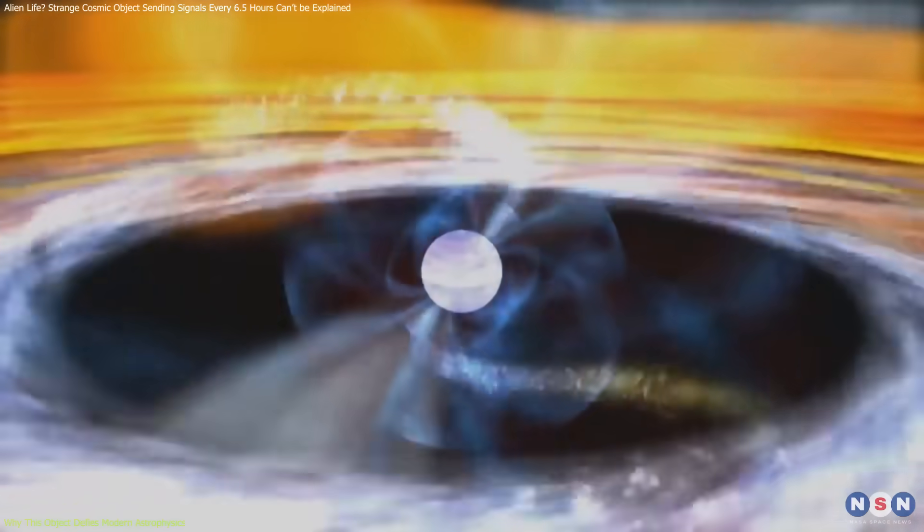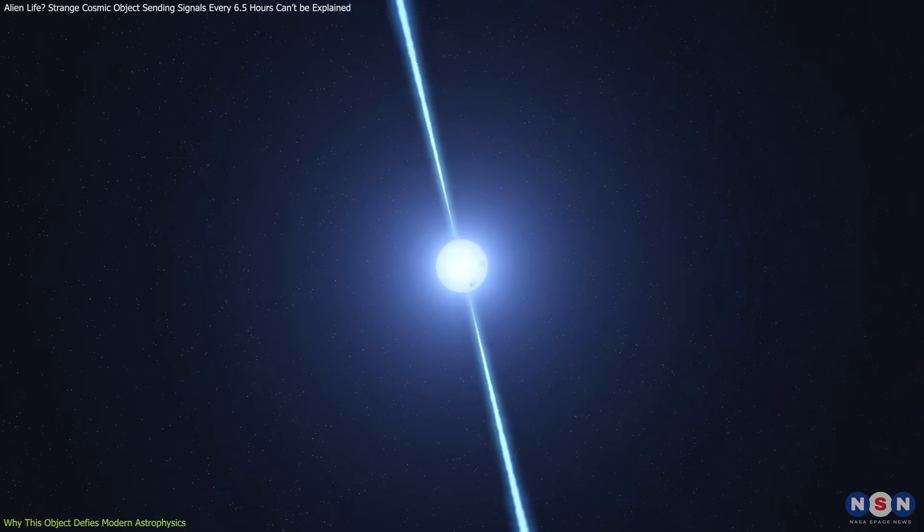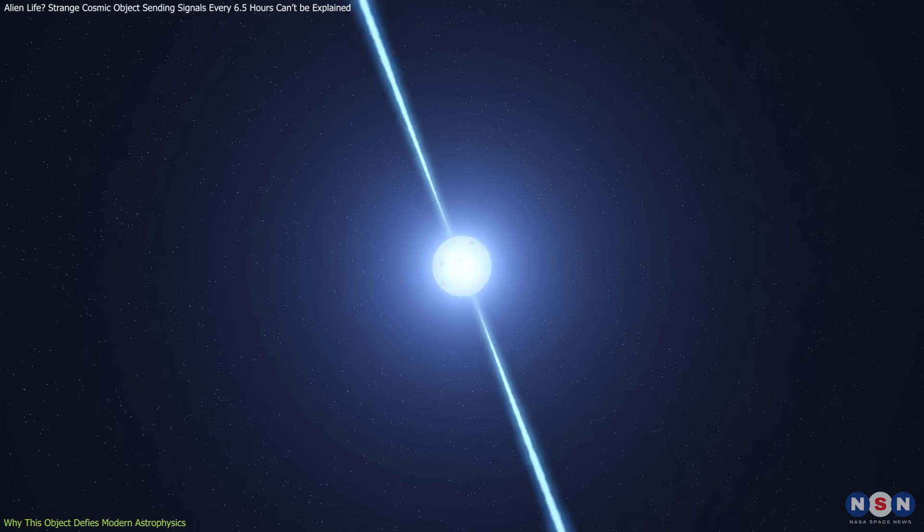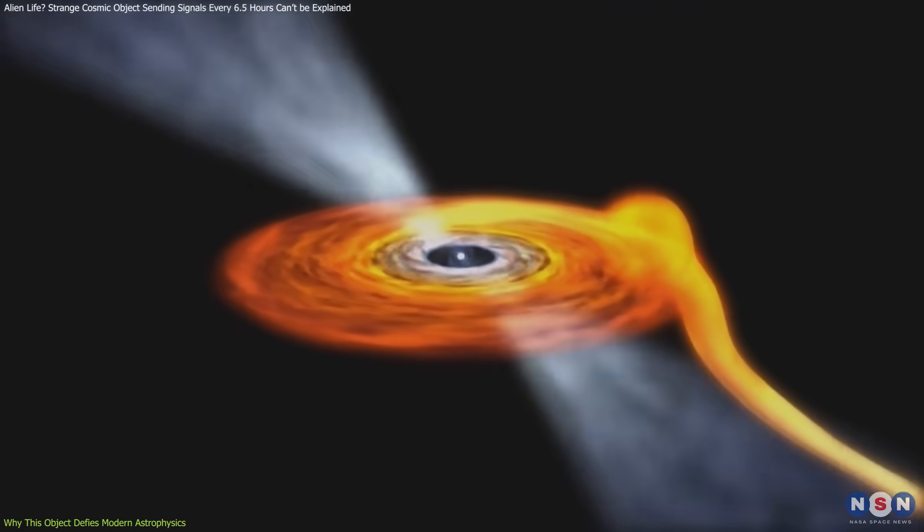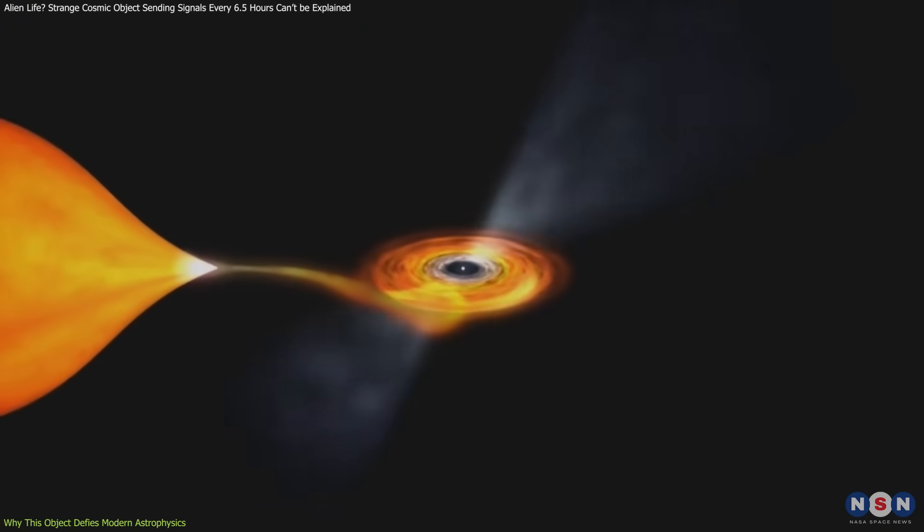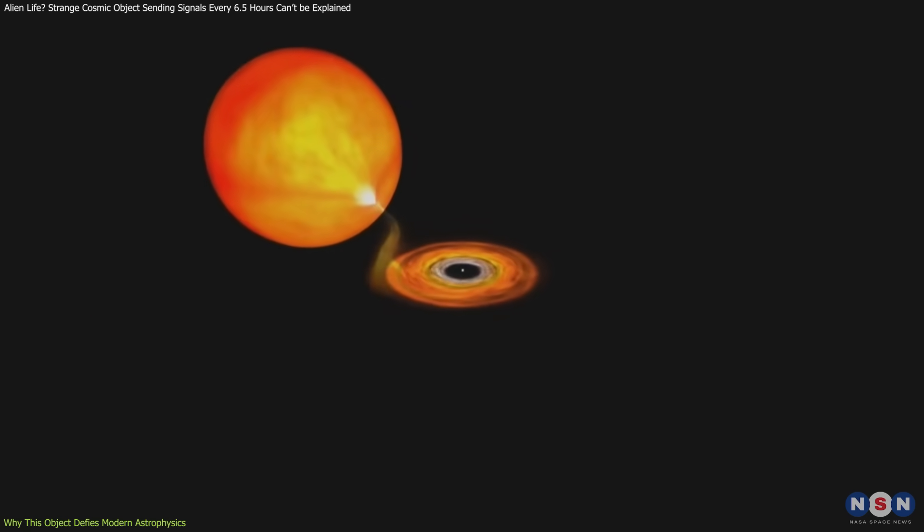According to current theoretical models, neutron stars should slow down gradually as they lose energy through electromagnetic radiation. However, once their rotation period exceeds a few minutes, they are expected to become radio silent due to insufficient energy to sustain their emissions.